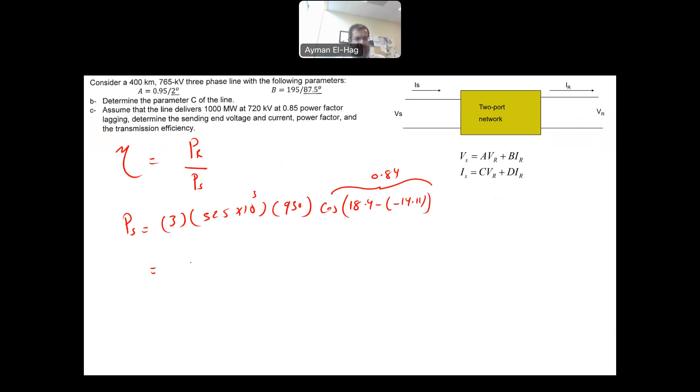So your efficiency is equal to 1000 times 10 to the power 6 divided by 1235.5 times 10 to the power 6. Multiply this by 100. This is a percentage and this will give you 80.9%. So that is the efficiency of the line. Thank you.